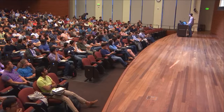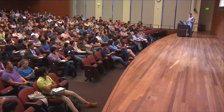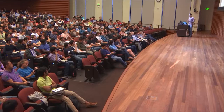If your problem has a small number of parameters to optimize and you have a simulator you can run lots of experiments on, derivative-free optimization methods are likely easier to get working than reinforcement learning. These methods take a black-box function: you put in a parameter vector and get a noisy score estimate, then optimize over those parameters. There's a variety of derivative-free optimization methods that are easier to understand and work more out of the box.